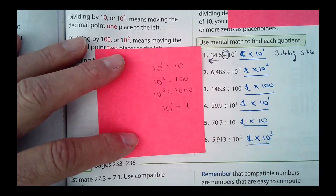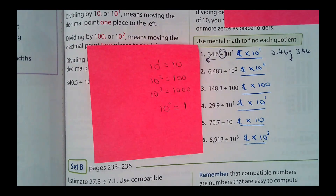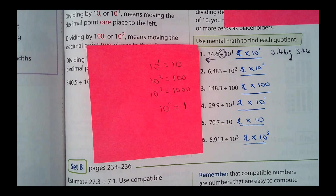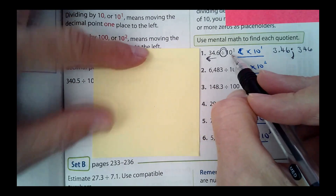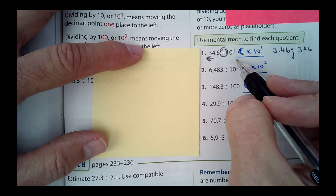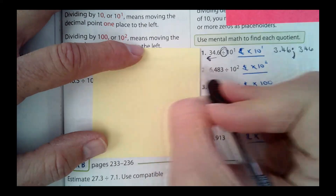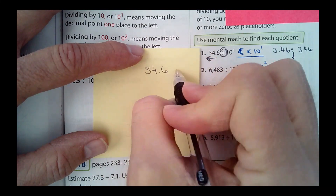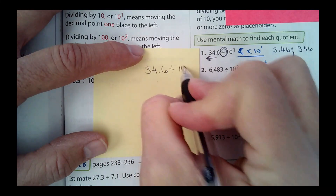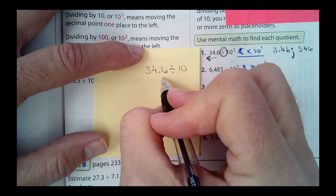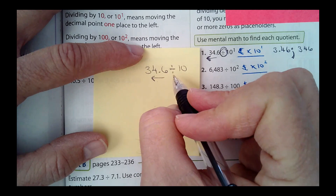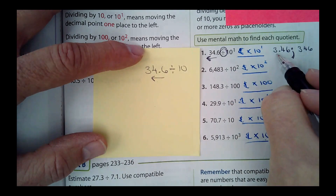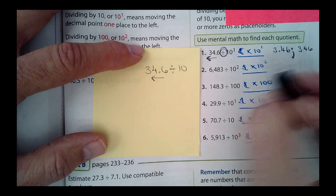Yes, anything with an exponent of zero equals one — that's kind of hard to read on that pink sheet. So for this first problem, 34.6 divided by 10: anything divided by 10, you're going to move the decimal. In this case, since it's divided by 10 to the first, you move the decimal one place to the left because the number is becoming smaller.